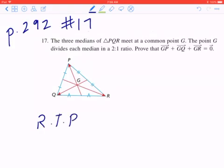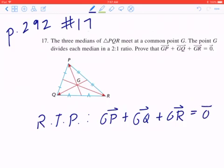So step one, I'm just going to write down required proof: GP plus GQ plus GR equals 0.